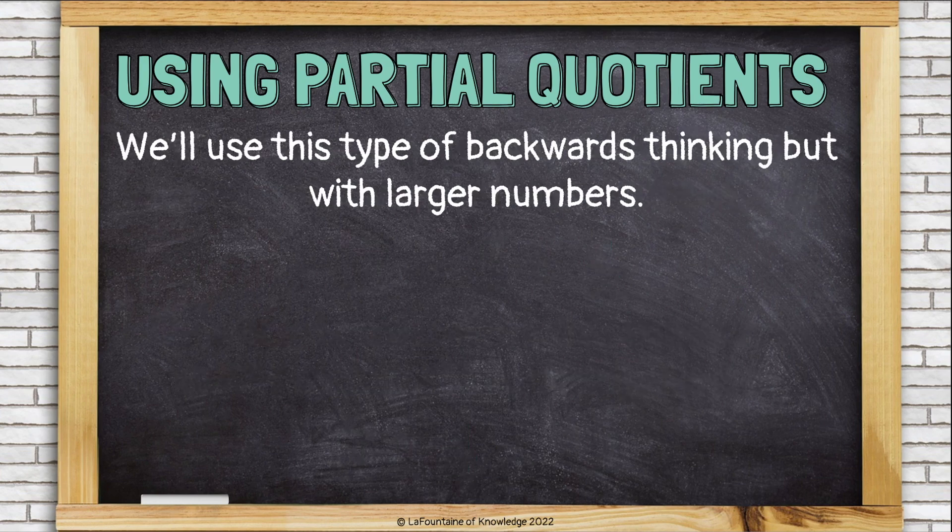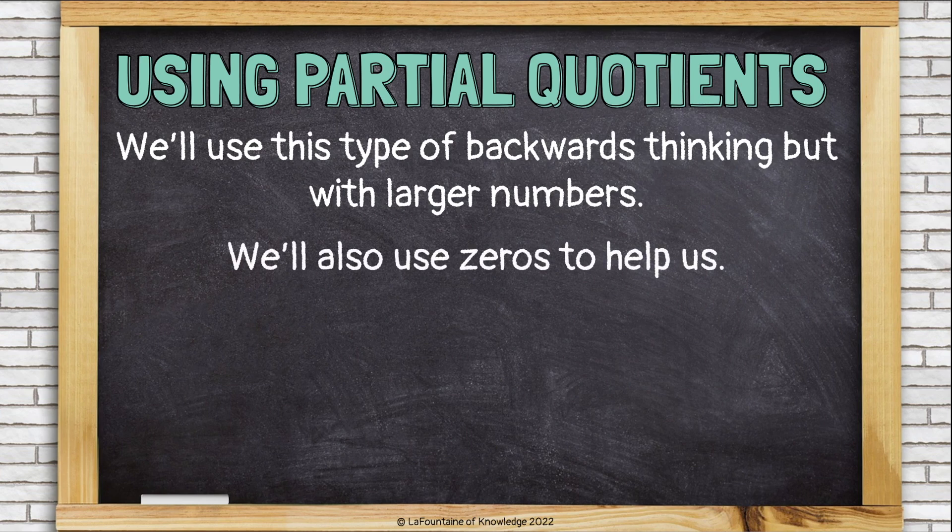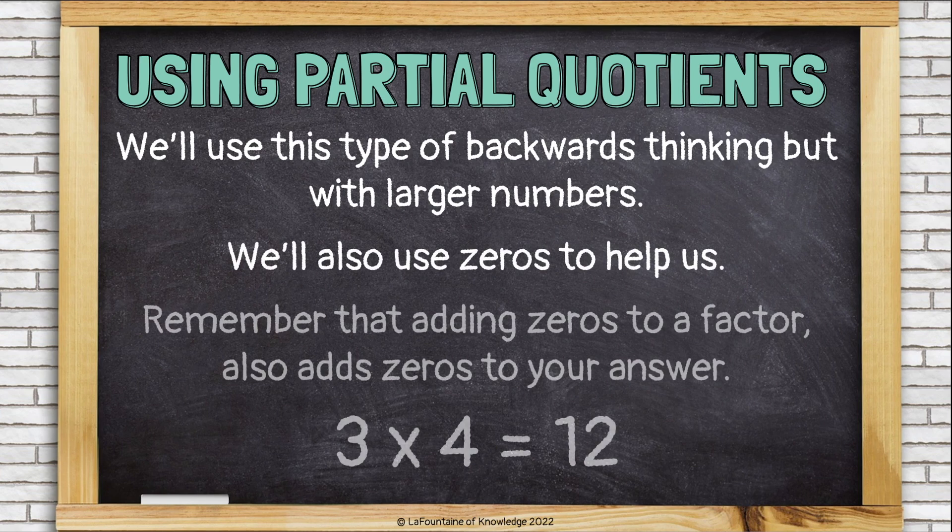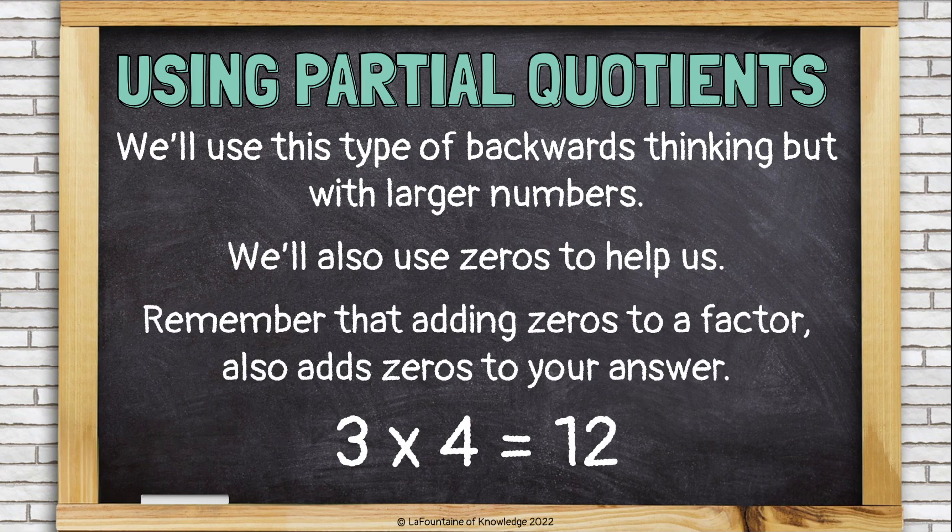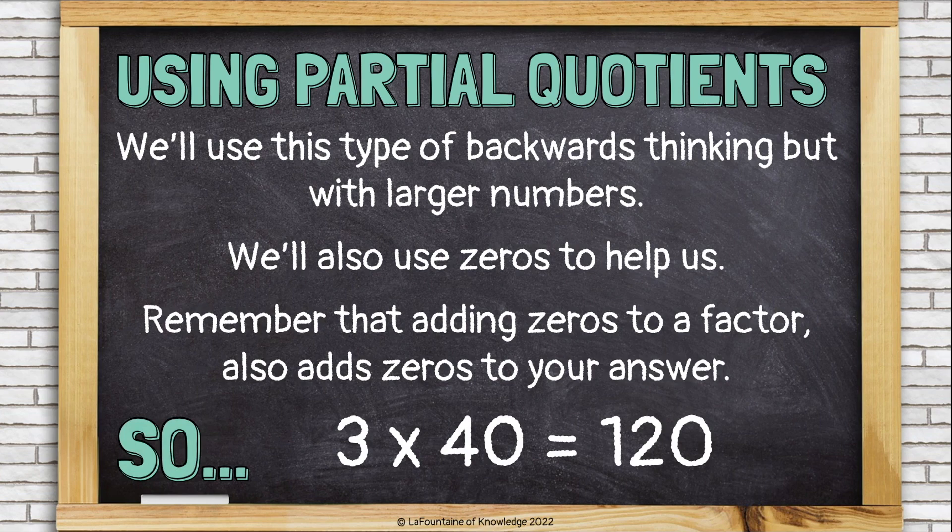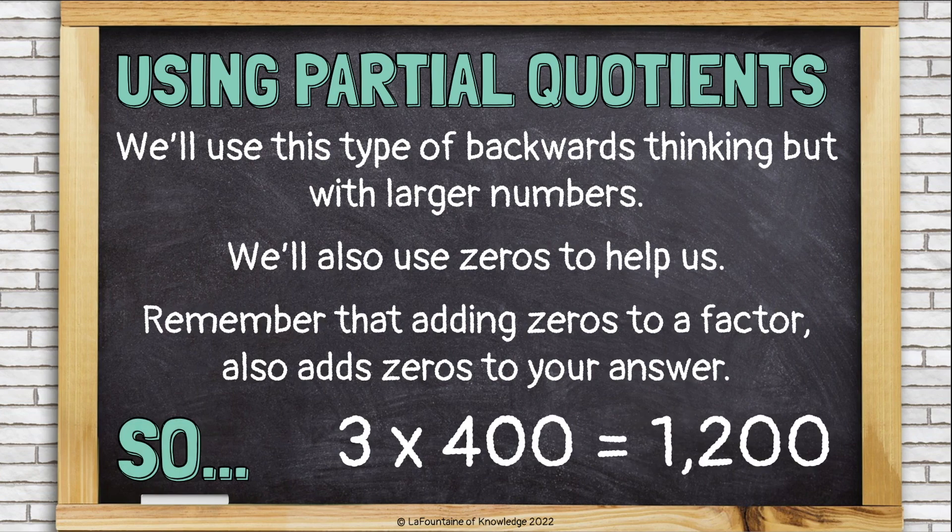We'll use this type of backwards thinking, but with larger numbers. We'll also use zeros to help us. Remember that adding zeros to a factor also adds zeros to your answer. We know that 3 times 4 is 12, so we also know that 3 times 40 is 120. We've just added a zero to the 4 and also to the 12. We also know that 3 times 400 is 1,200, and so on.